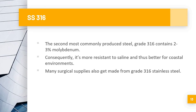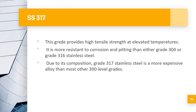SS 317 provides high tensile strength at elevated temperatures and is more resistant to corrosion and pitting than either grade 304 or 316. Due to its composition, grade 317 stainless steel is a more expensive alloy than most other 300-level grades, so it is used less frequently than 304 and 316 because of its higher cost.